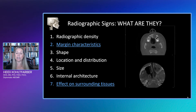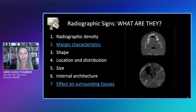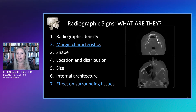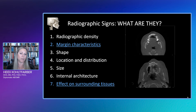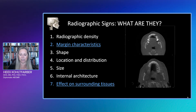Those radiographic signs are: radiographic density, margin characteristics, shape, location and distribution, size, internal architecture, and the effects on the surrounding tissues. The two that are underlined are the most important because they tell us how aggressive a particular entity is. So we're really going to pay attention to our marginal characteristics and the effects on the surrounding tissues.